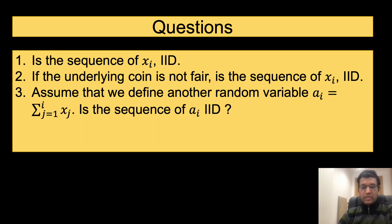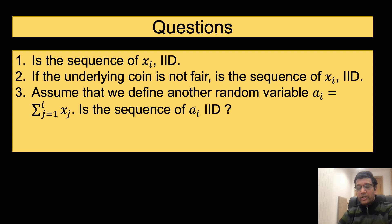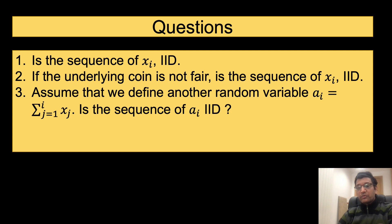Question 1: Is the sequence of x sub i IID? Question 2: If the underlying coin is not fair, is the resulting sequence of x sub i IID? Note that this question differs from question 1 because in question 1 we made an assumption of the coin being fair. Question 3: Assume that we define another random variable a sub i, which is the sum of x sub j for j equals 1 to i, or the number of heads in the i tosses of the coin. Is the sequence of a sub i IID?